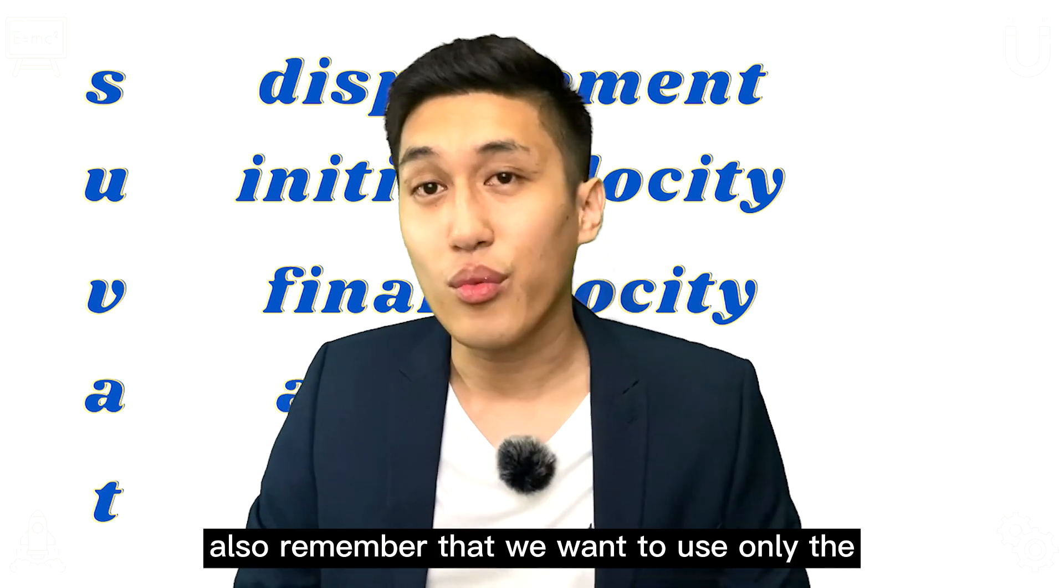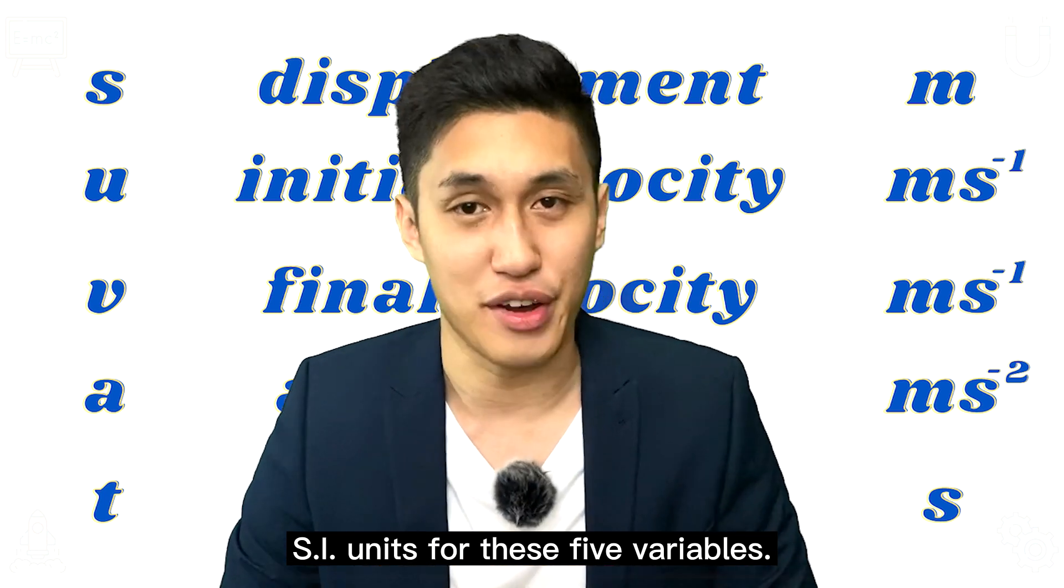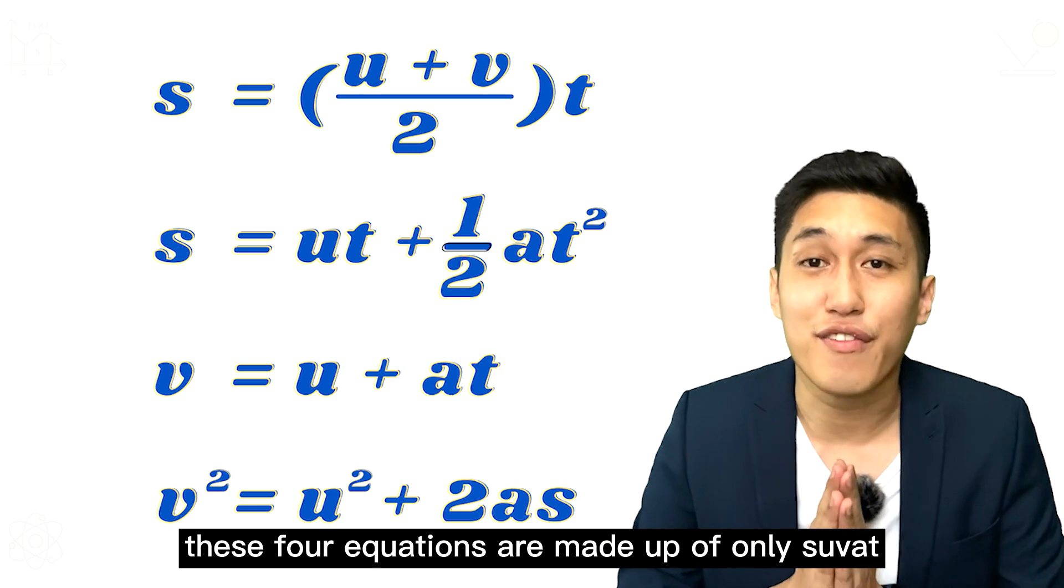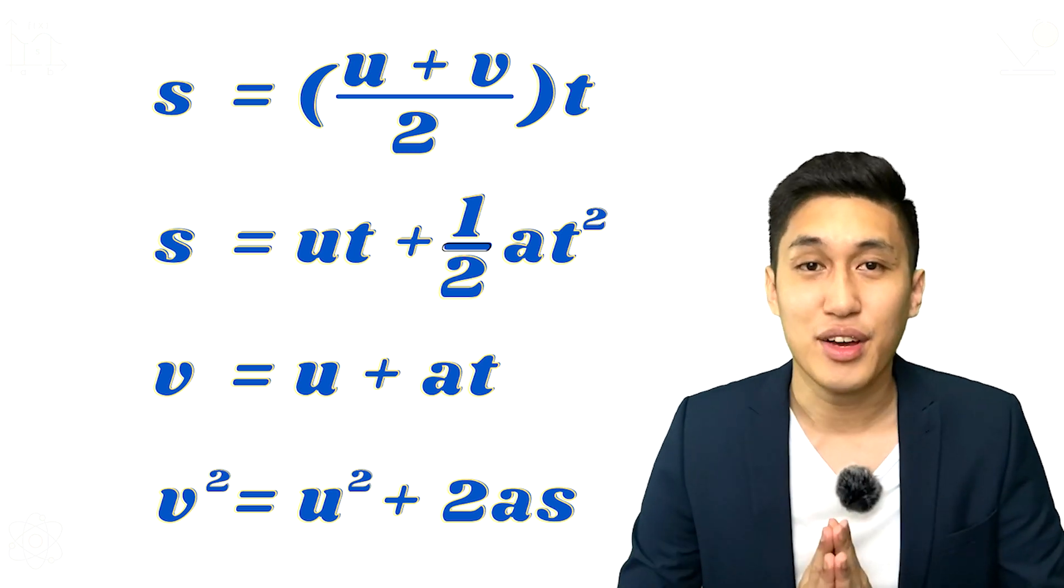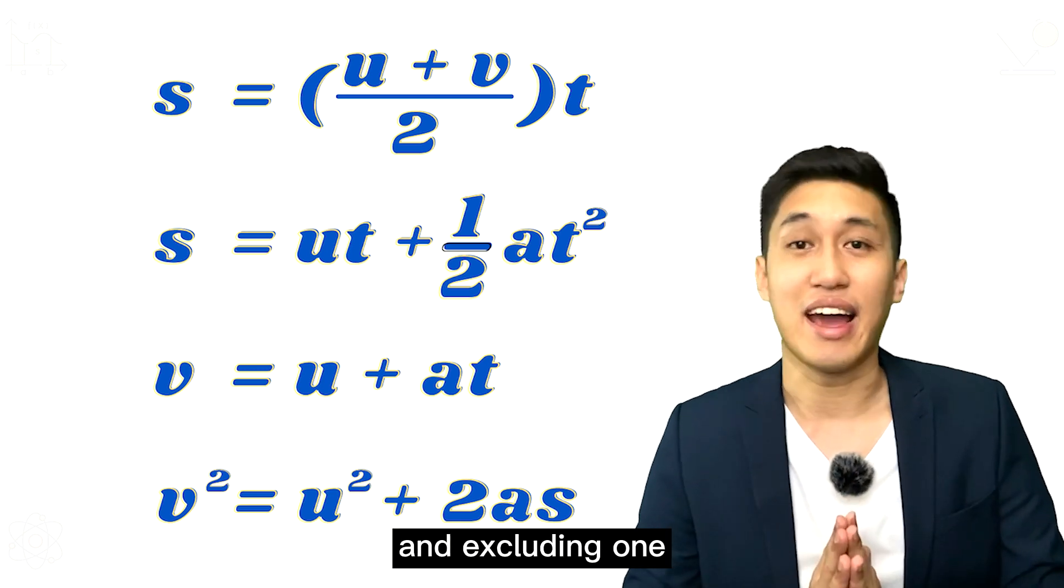Also, remember that we want to use only the SI units for these 5 variables. As you can see here, these 4 equations are made up of only SUVAT, with each equation using 4 out of the 5 variables and excluding 1.